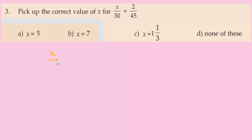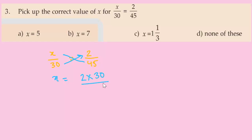We have x/30 = 2/45. Cross multiplying: x equals 2 times 30 divided by 45. Dividing numerator and denominator by 15 gives 2 times 2 over 3, so x equals 4/3, which equals 1 and 1/3.